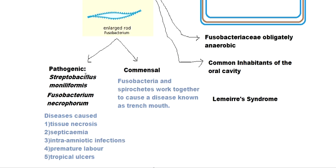When they infect the jugular vein — which drains deoxygenated blood toward the lungs — they destroy its wall to enter it. The platelets then form a platelet plug to heal the wall, but due to blood flow, portions of the platelet plug can dislodge and cause thromboembolism in other parts of the body. This type of disease is called Lemierre's disease.